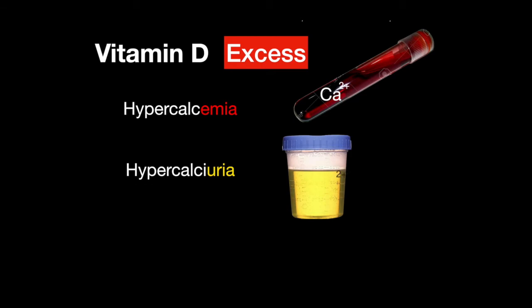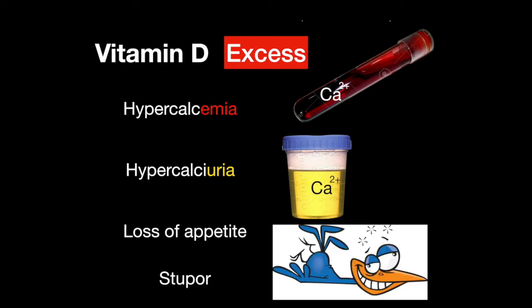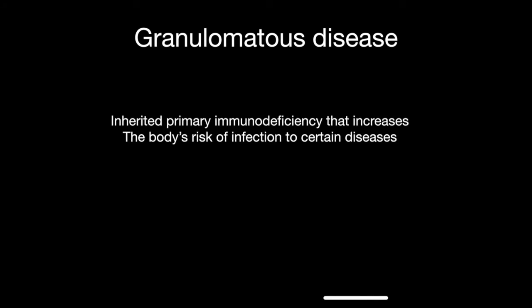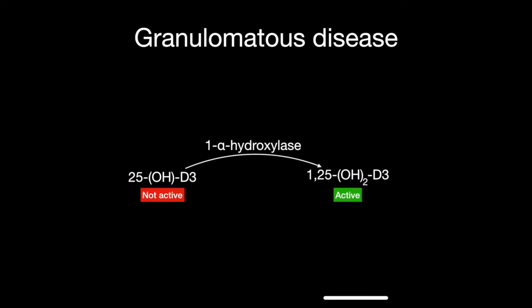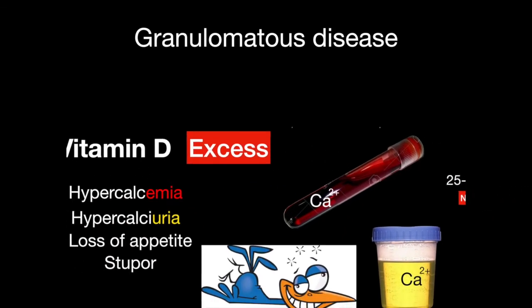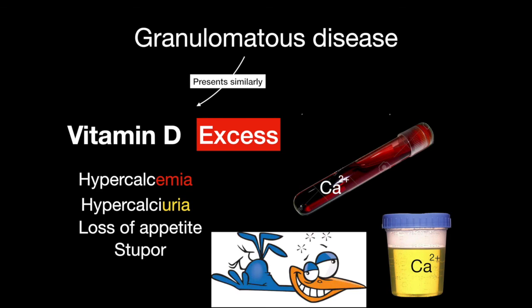In excess of vitamin D, hypercalcemia, hypercalciuria, loss of appetite, and stupor — a state in which one has difficulty thinking — can all be symptoms. A granulomatous disease is an inherited primary immunodeficiency that increases the body's risk of infection by certain bacteria and fungi. In granulomatous disease, the enzyme 1-alpha-hydroxylase is hyperactive, making too much of the active 1,25-dihydroxyvitamin D. Therefore, this disease presents similarly to having excess vitamin D.